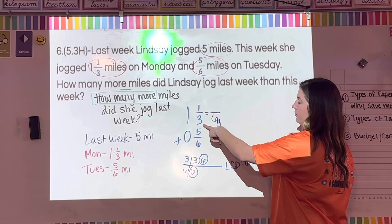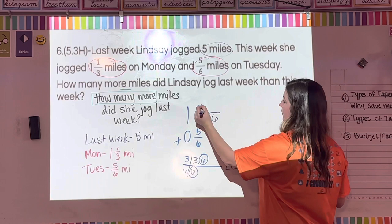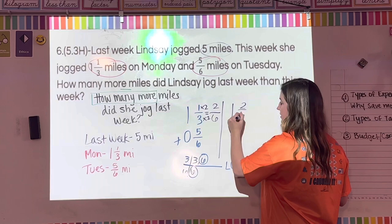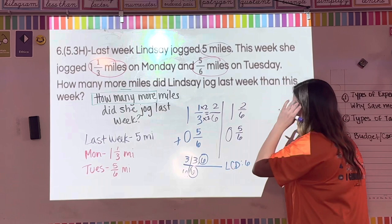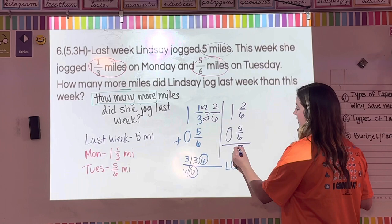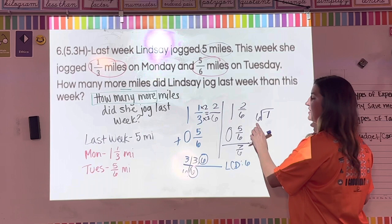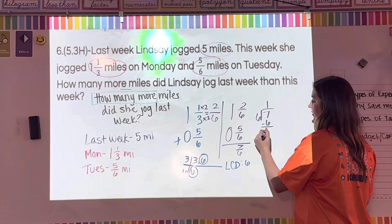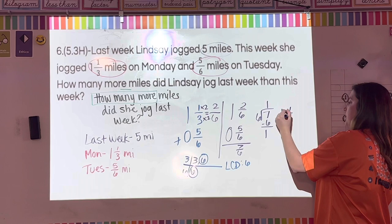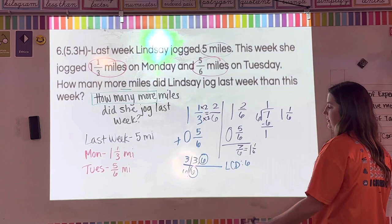Now I have one and two-sixths plus zero and five-sixths. Two-sixths plus five-sixths equals seven-sixths. Seven-sixths is an improper fraction, so I convert it: six goes into seven once with remainder one. That gives me one and one-sixth. Adding the whole numbers: one plus one equals two. So she ran two and one-sixth miles this week.